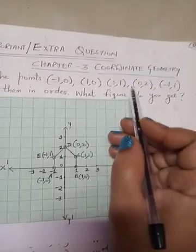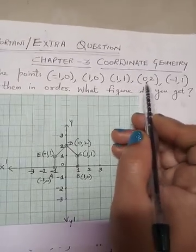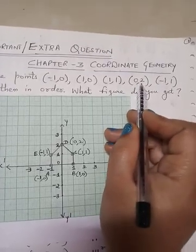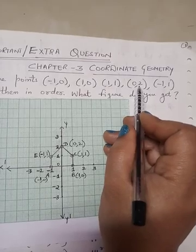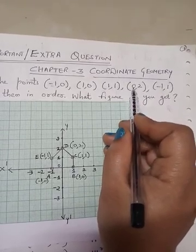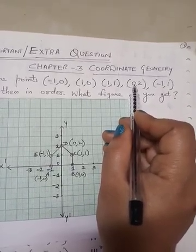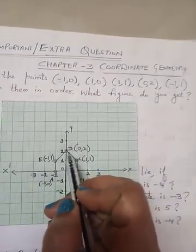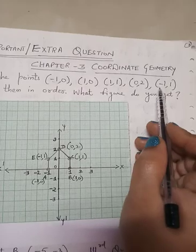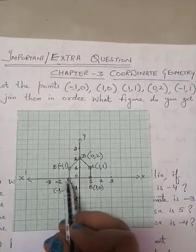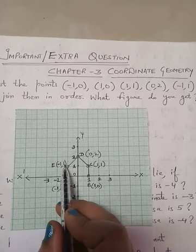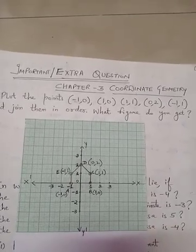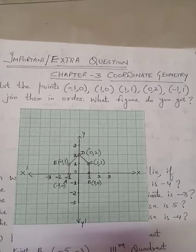For (0, 2), the x-coordinate is 0, so this point will lie on the y-axis. Since the y-coordinate is positive 2, it lies on the positive y-axis. So (0, 2) is point D. For (-1, 1) — negative x, positive y — it will lie in the second quadrant. (-1, 1) is point E.